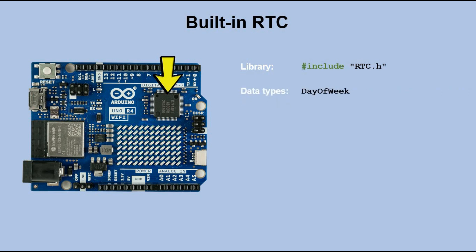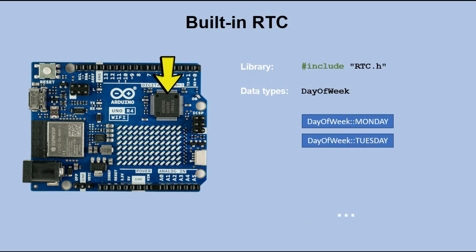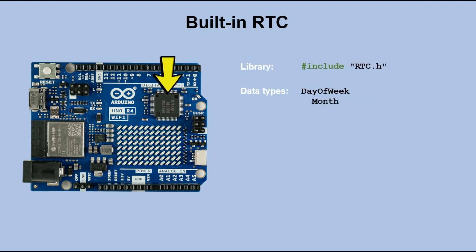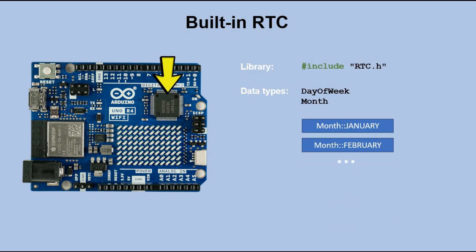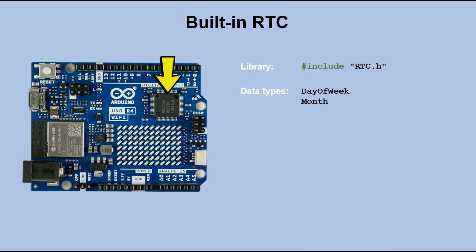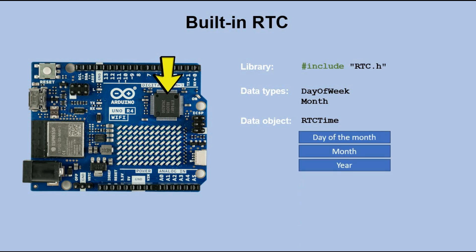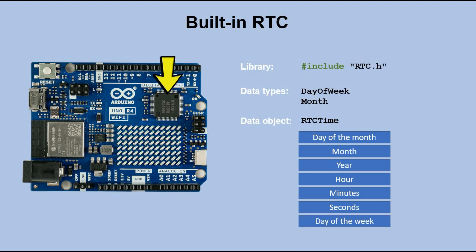One is called day of week and it can have following values. The other special one is month, which also has its own set of possible values. We also have an RTC time object, which holds all the important information for storing date and time. This includes day of the month, month, year, hour, minutes, seconds, day of the week and a flag for daylight saving.